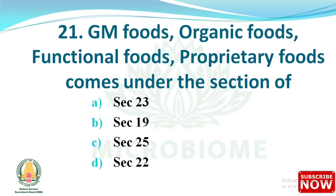Next question: GM foods, organic food, functional foods, and proprietary foods come under which section? Options are: section 23, section 19, section 25, section 22. The right answer is option D: section 22.